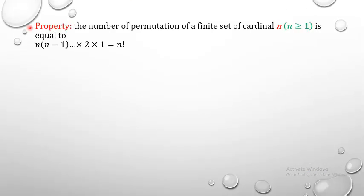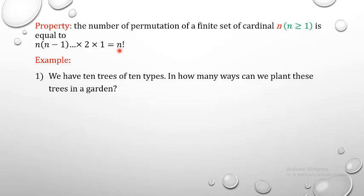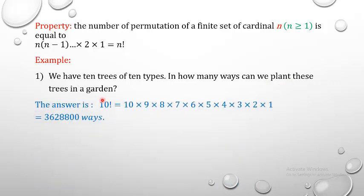There is a property to calculate the number of permutations: n × (n−1) × ... × 2 × 1, which we know as n factorial. For example, we have 10 trees of 10 different types. In how many ways can we plant these trees in a garden? The answer is 10! = 10 × 9 × ... × 1 = 3,628,800 ways.